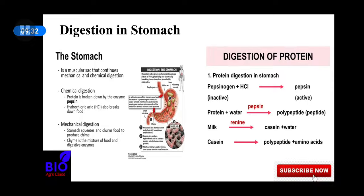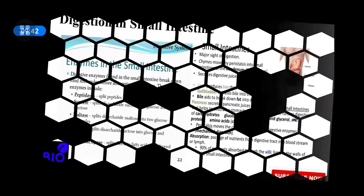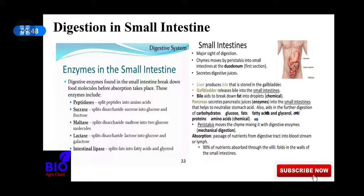When digestion in the stomach is completed, the food then goes to the duodenum of the small intestine. Digestion in the small intestine starts when the food arrives in the duodenum section. Then secretions begin: pancreatic juice comes from the pancreas, and bile comes from the liver through the gallbladder. This pancreatic juice plays a vital role in digesting all kinds of food elements — carbohydrates, proteins, and lipids. All kinds of food elements can be digested here in the small intestine.